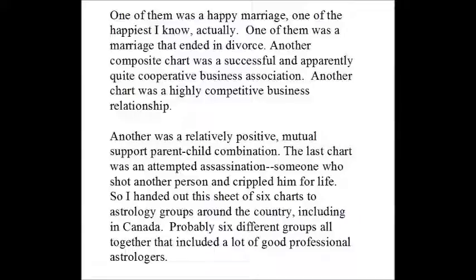Six little composite charts. Three of them were relatively positive relationships and three were relatively negative. There was one successful, very happy marriage, and one marriage that ended in divorce. There was one relatively successful business relationship and another highly competitive one with two people competing with each other. There was one parent-child relationship with quite a bit of mutual support, and there was an attempted assassination — someone who tried to kill someone and succeeded in paralyzing him.